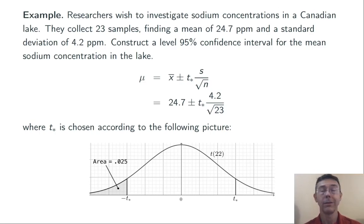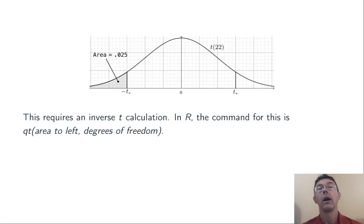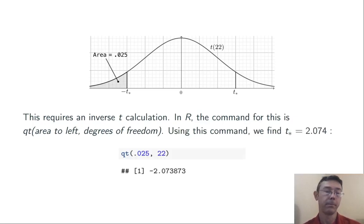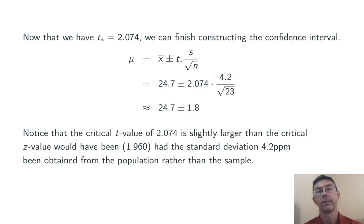We need to find our critical t value, t-star, by capturing 95% of the area between negative t-star and positive t-star, which means leaving out 2.5% on each side. We find this using an inverse t calculation. In R, the command is qt, which takes two arguments: the area to the left and the degrees of freedom — exactly paralleling the qnorm command for inverse normal calculations. Using qt(0.025, 22), we get a t-star value of 2.074, which we plug into the interval: 24.7 plus or minus 2.074 times 4.2 over the square root of 23, which simplifies to 24.7 plus or minus 1.8.